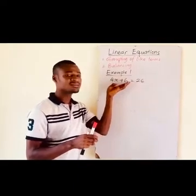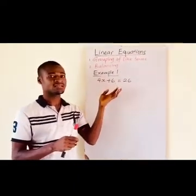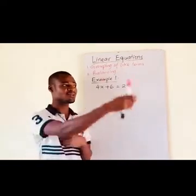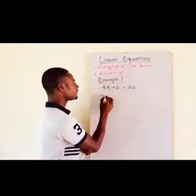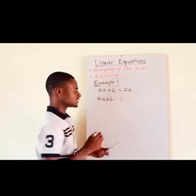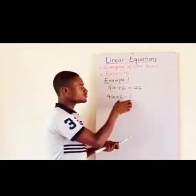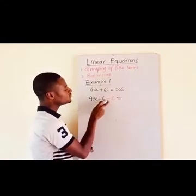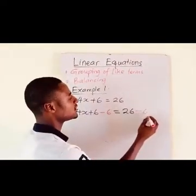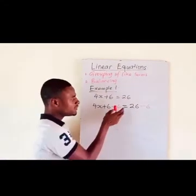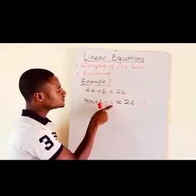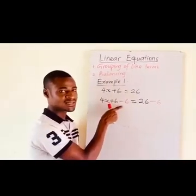Negative 6 will cancel the positive 6 at the left hand side. But we must note that anything we introduce at the left hand side, we must also introduce at the right hand side. So we have 4x plus 6, and we introduce negative 6 at the left hand side to cancel it. Whatever we introduce at the left hand side, we must introduce at the right hand side.